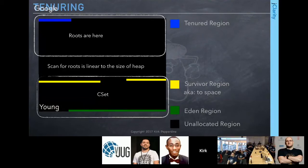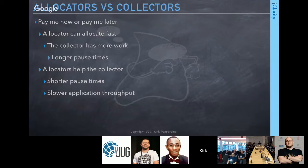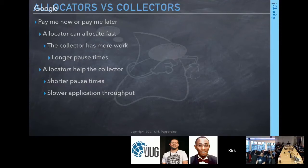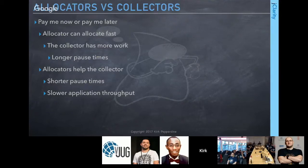There's a tradeoff: having collectors do all the work gives longer pause times; having allocators do all the work (like in C) slows application throughput. The goal is to balance allocator and collector work to find a happy medium — not slowing the application down, but not giving the collector too much work either.